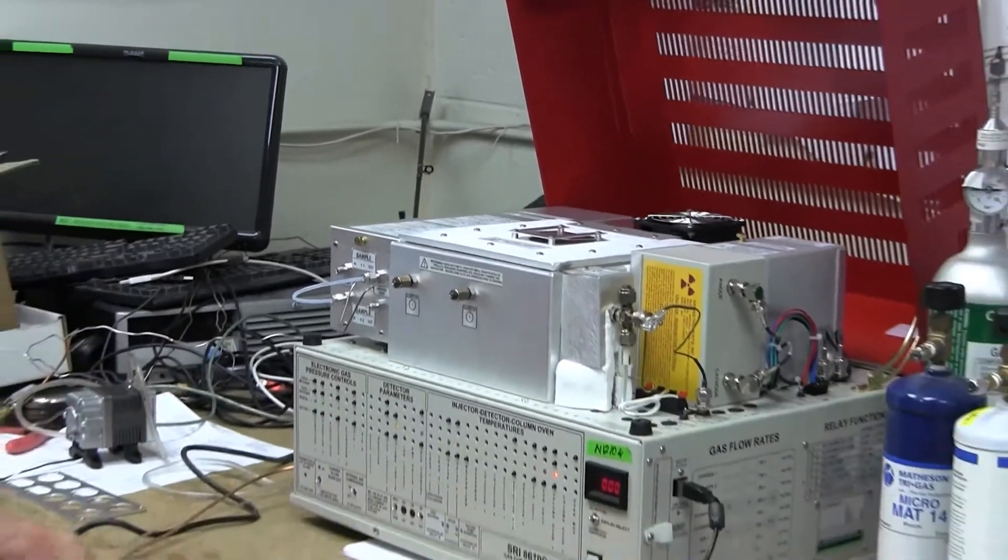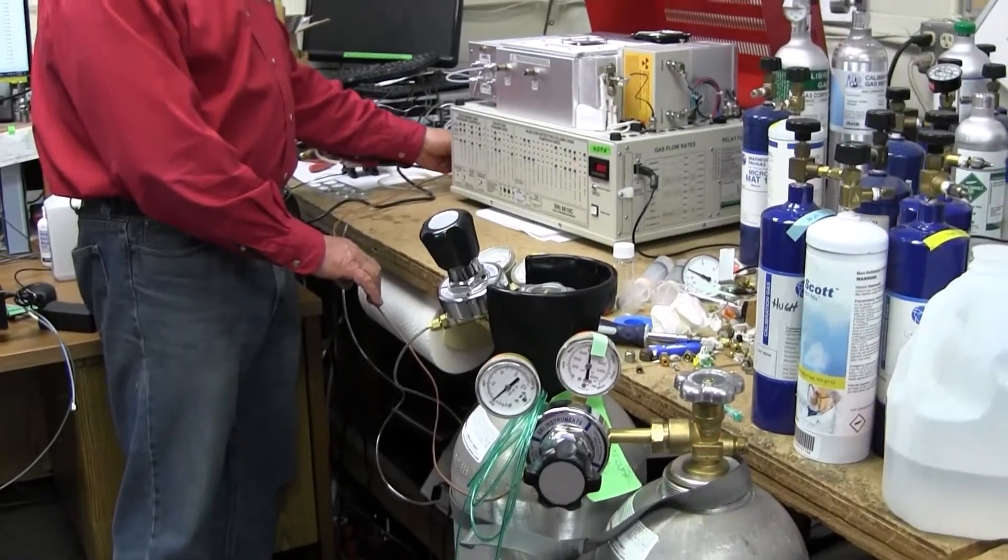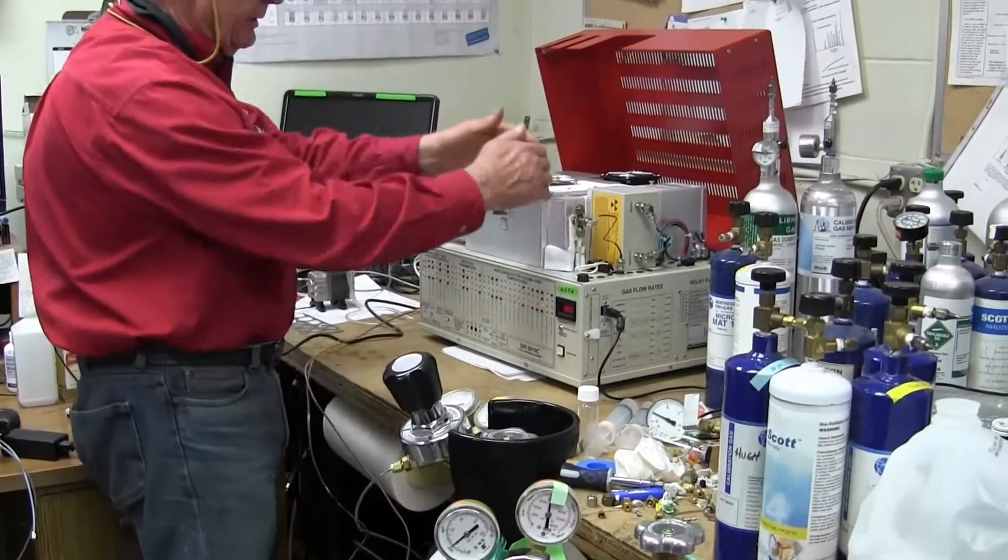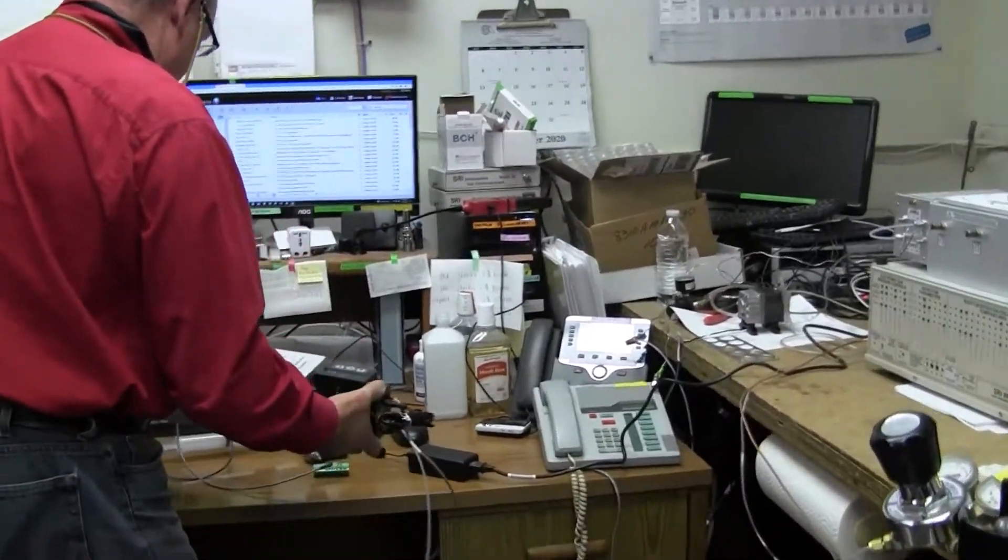So I've got my gases hooked up to the GC. I've got my argon for the TCD, and I've got nitrogen for the ECD and the FID methanizer, and then this is the auto sampler, this box here.